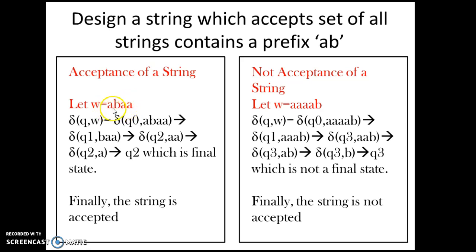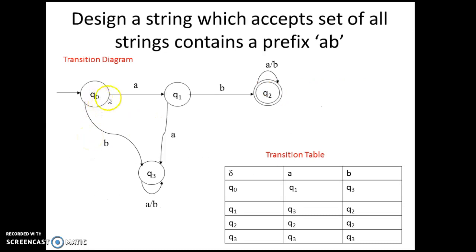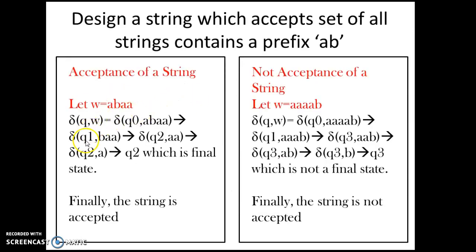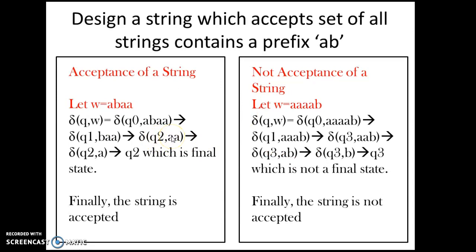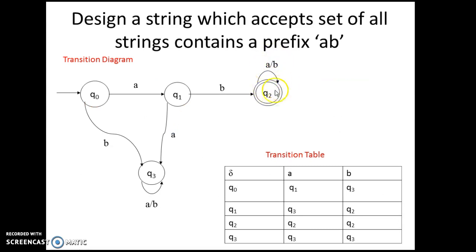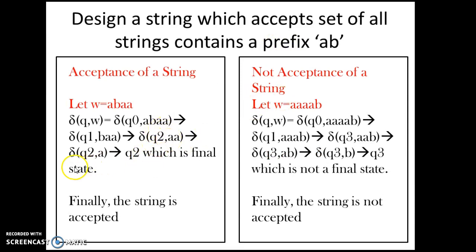To check acceptance, take input word ABAA. Delta of Q0 upon A gives Q1. Then Q1 upon B gives Q2. Once you enter the acceptance state Q2, any number of a's and b's keep you in the same state: Q2 upon A gives Q2, and Q2 upon A gives Q2 again. Since you end in the final state Q2, the string ABAA is accepted.